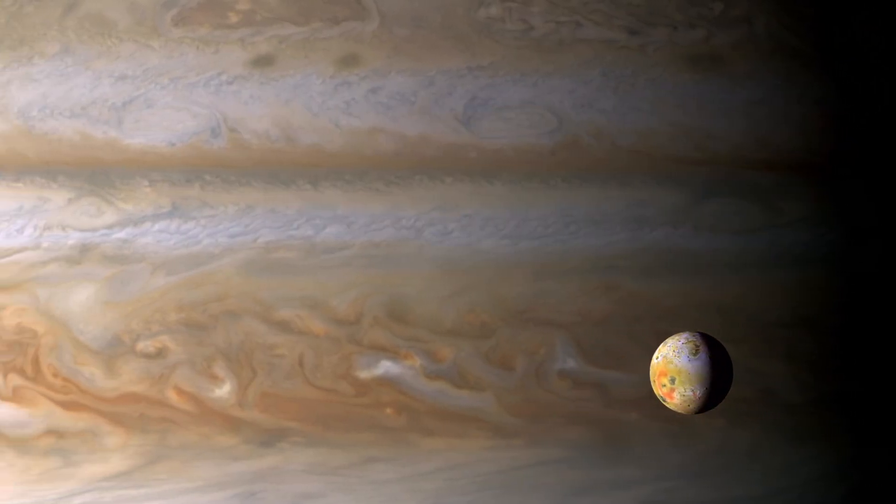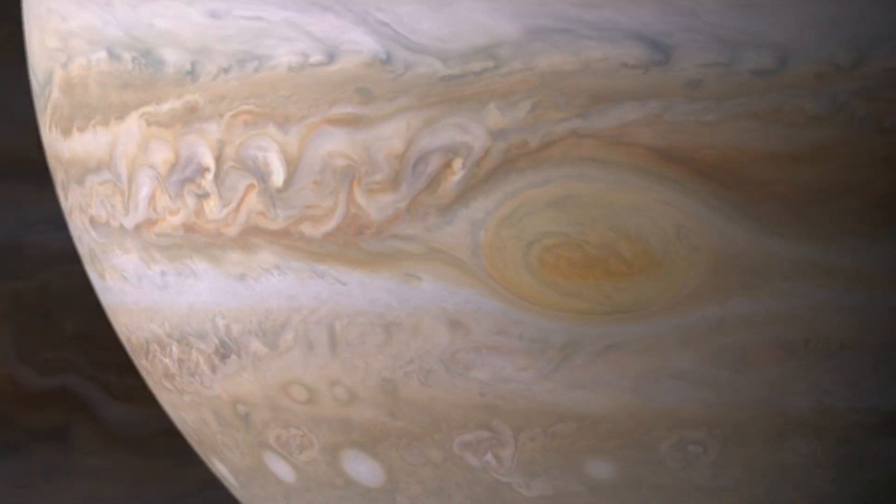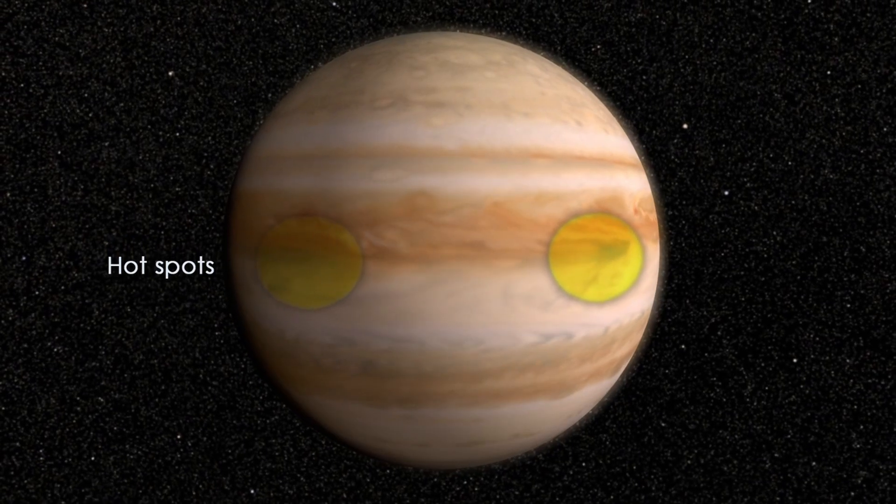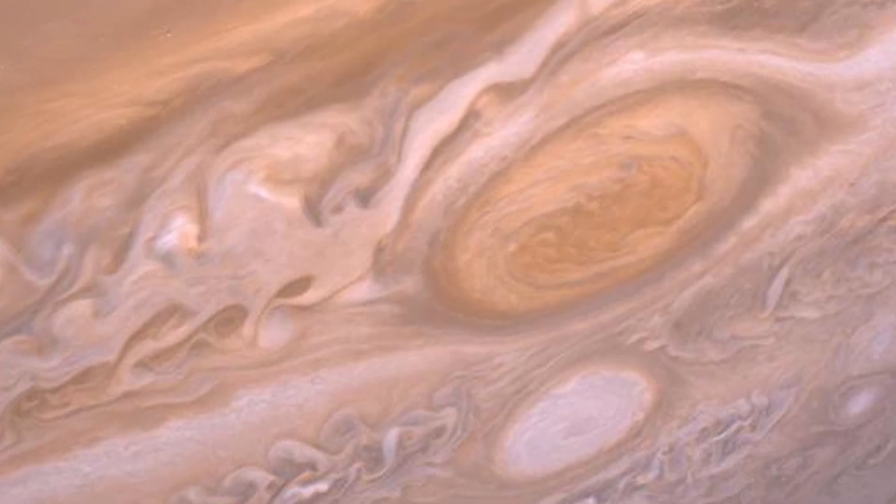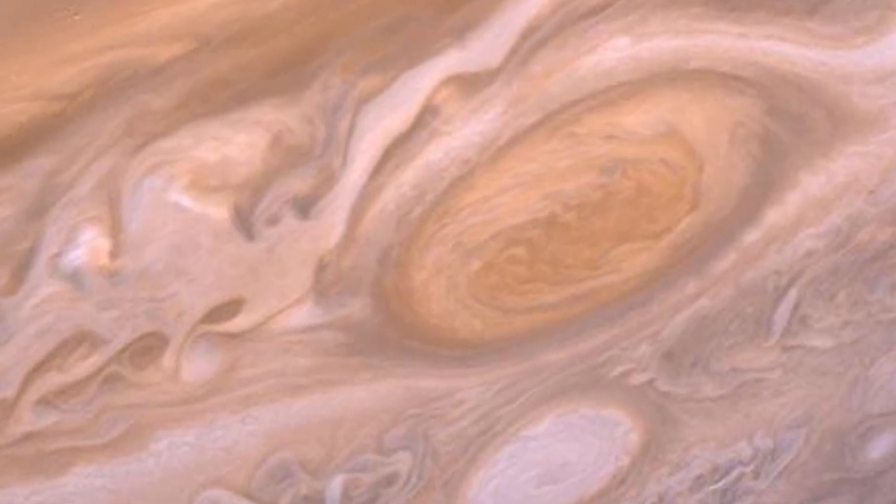In March 1979, Voyager 1 made its closest approach to Jupiter, revolutionizing our understanding of the gas giant. The spacecraft revealed stunning details of the planet's massive storms, including the now-famous giant red spot.